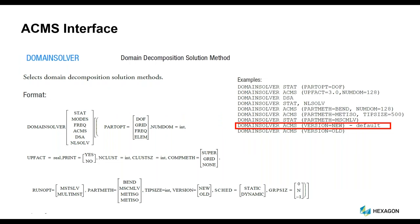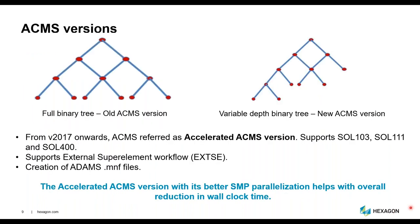The ACMS interface is pretty straightforward. All we need to do is add DOMAINSOLVER ACMS in the executive control section of our Nastran input deck. For version 2017 onwards, the default version is 'new,' so we don't even have to define that parenthesis. During the latest ACMS versions, we have consistently worked toward enhancing its capabilities. Starting from version 2017.1 onwards, the new version is set as default.